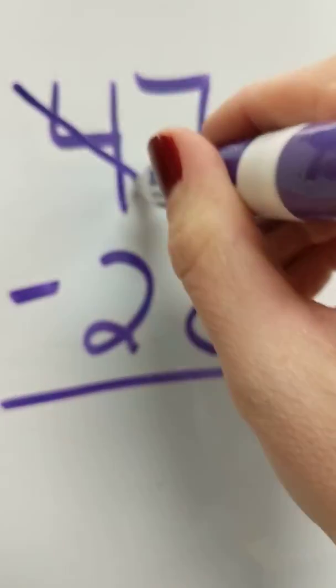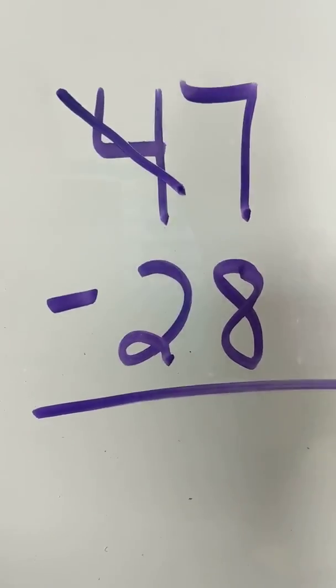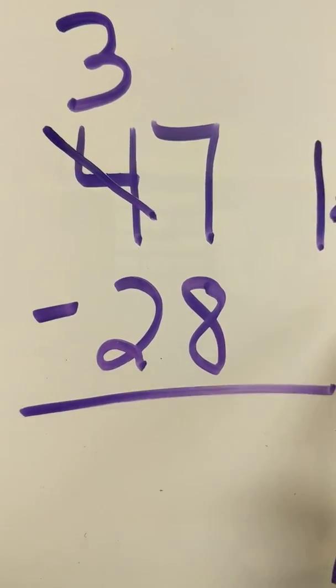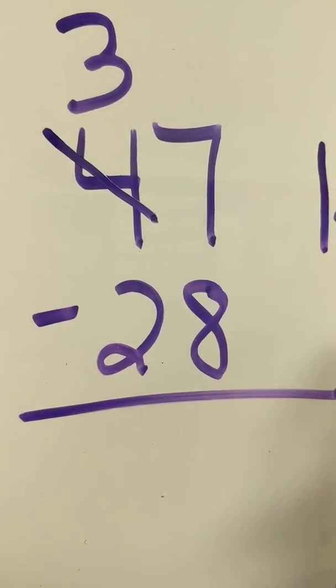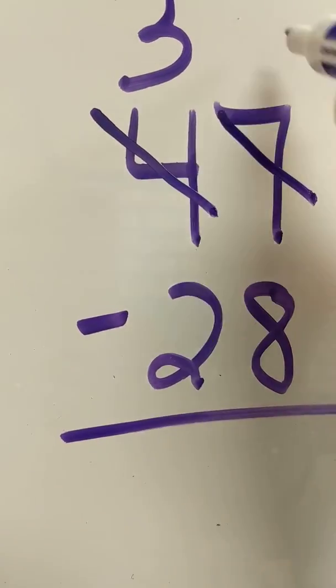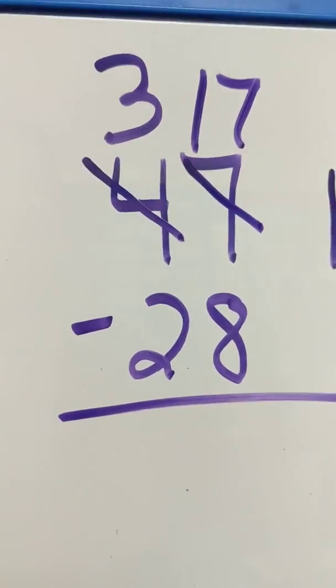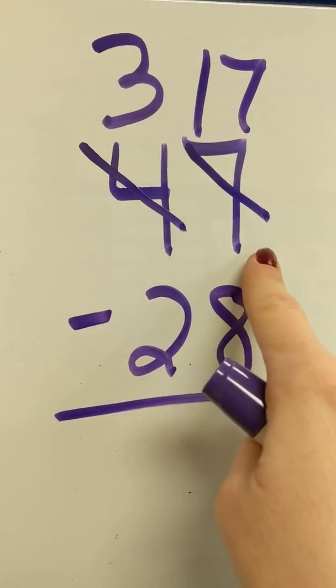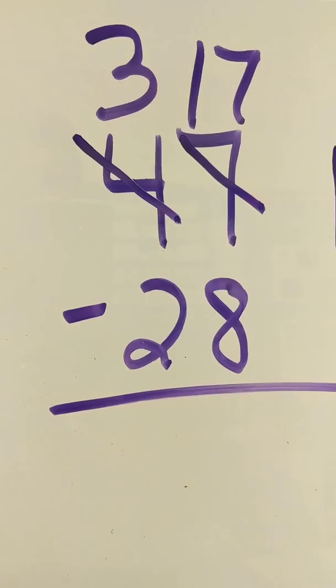So I'm going to mark out the four and make that a three, which is the same thing we're basically doing over here. You're taking a 10 and you're giving that to the ones. So now we have 17 over here. So I took a 10 here and I gave it to the ones. 10 plus 7 gives me 17.